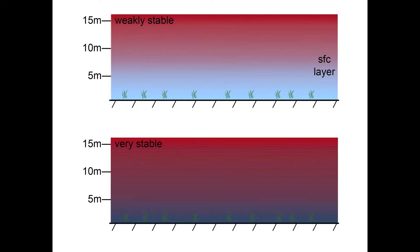The lower panel illustrates nights with clear skies and very weak winds, when the boundary layer and surface layer are much thinner and may not even be definable. In this case, much weaker turbulence and downward heat flux can lead to quite rapid cooling near the surface. We will refer to this case as the strongly stable surface layer.